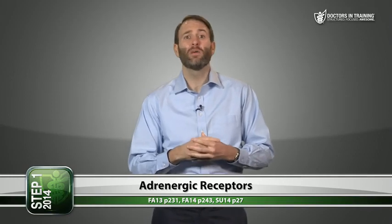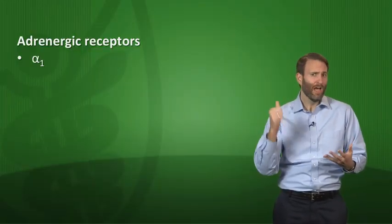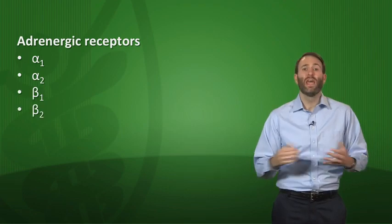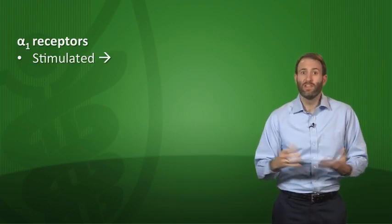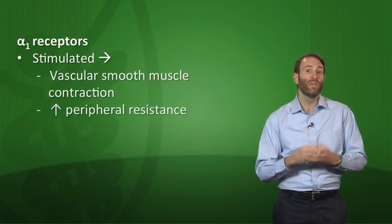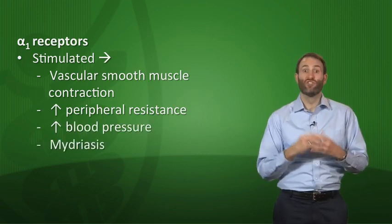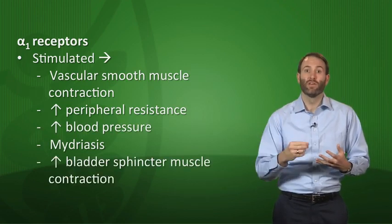Now we need to talk about adrenergic receptors — the main part of this lecture. There are four you need to know really well: alpha-1, alpha-2, beta-1, and beta-2. When alpha-1 receptors are stimulated, this results in vascular smooth muscle contraction, leading to increased peripheral resistance, increased blood pressure, mydriasis, and increased bladder sphincter muscle contraction.